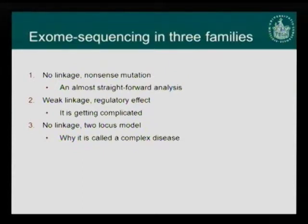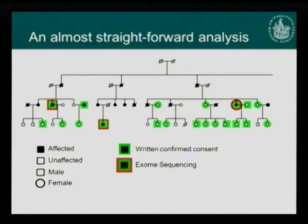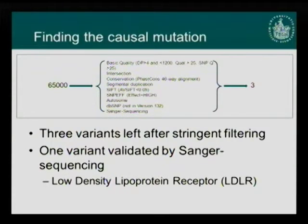I'll start with the simplest example — a family where we had no linkage results but in the end were able to find a nonsense mutation. This is the affected left arm of the family, with affected members shown as dark symbols and those available for genetic studies shown in green. We selected three family members for exome sequencing. Starting with around 65,000 variants per exome, we applied filters for conservation, not present in 1000 Genomes, and high functional effect, leaving us with three variants.